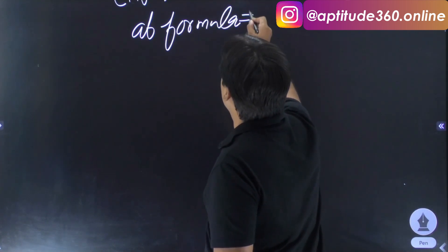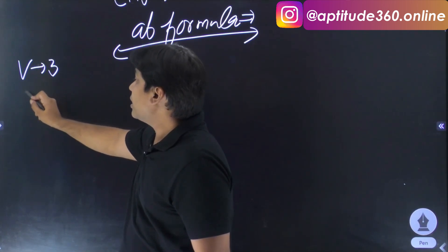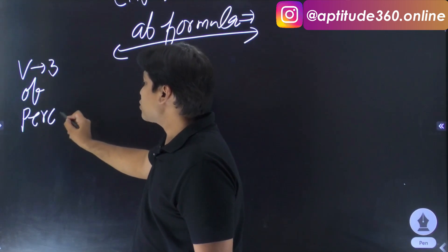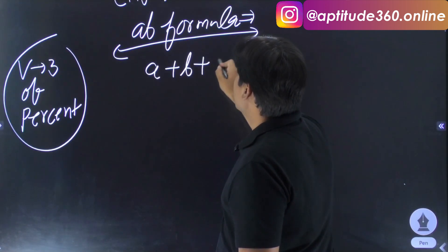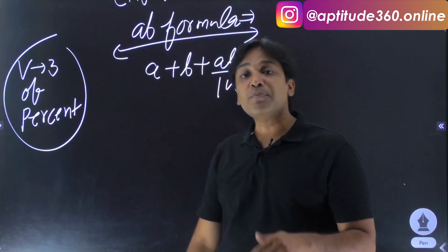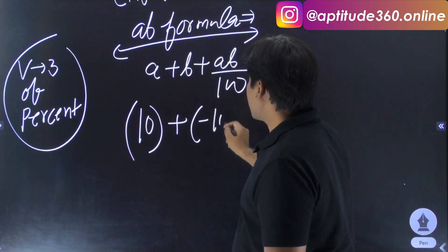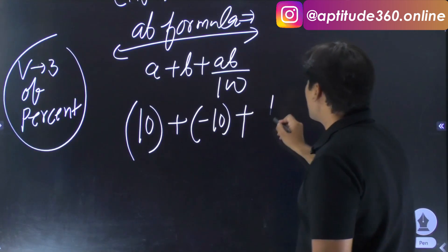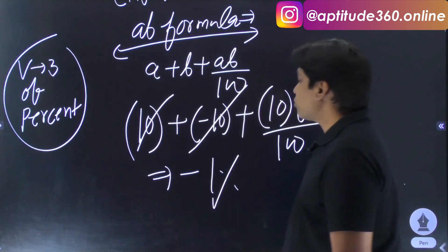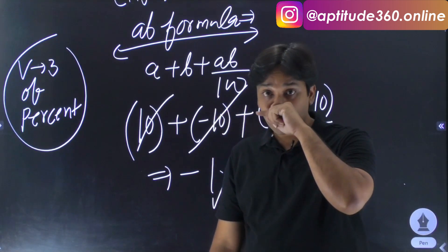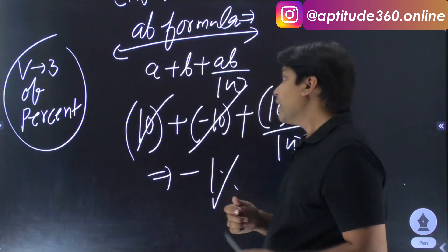I hope you have seen the successive video on profit and loss or video number 3 of percentage. The AB formula states: A plus B plus AB upon 100. Whenever selling prices are the same, you can apply the AB formula. Item one is sold at 10% profit and item two at 10% loss. Substituting: 10 + (−10) + (10 × −10)/100 = −1%, so the loss is 1%.